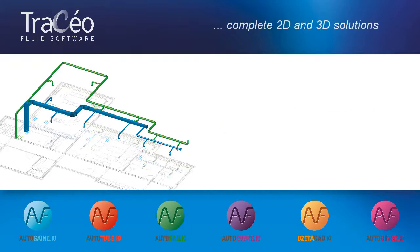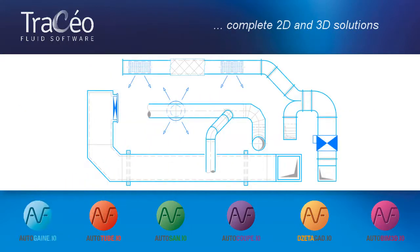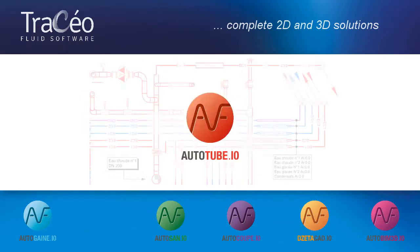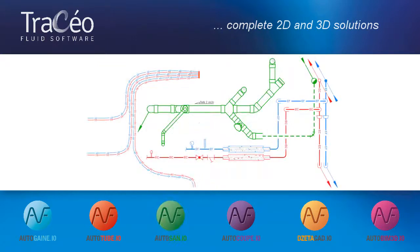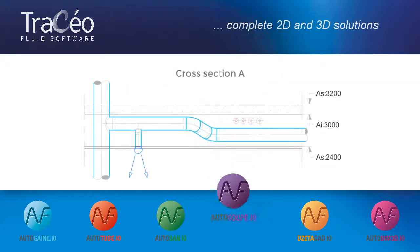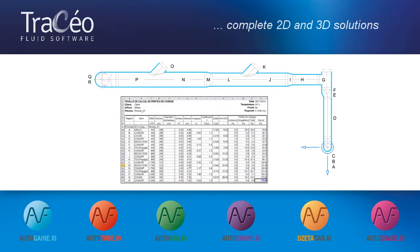It currently contains six software. AutoGain for aeraulic ducts design, heating, air conditioning and ventilation. AutoTube for heating pipes. AutoSan for plumbing and sanitary pipes. AutoCoop to create cross-sections using what was drafted with the different software in top view. ZetaCAD to compute pressure drops using the networks drafted with AutoGain or AutoTube.